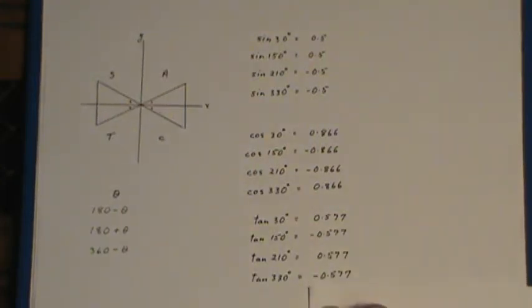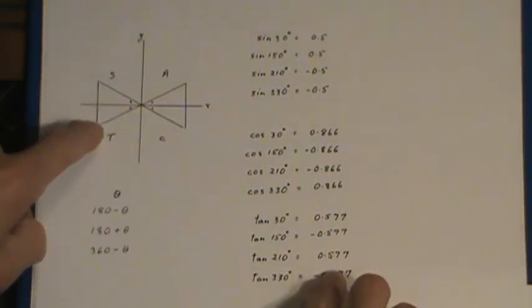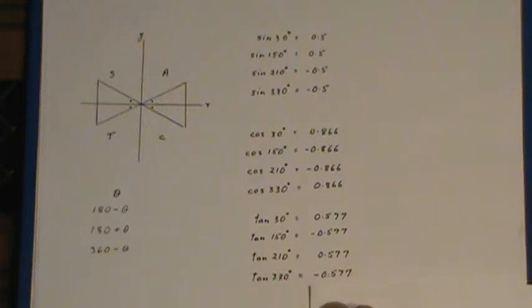But if you take a look at these, tan of 210, that's the one that ends up here in quadrant 3, is the only other one that is positive.